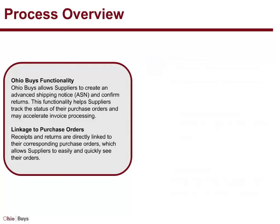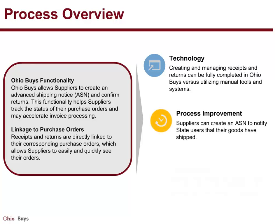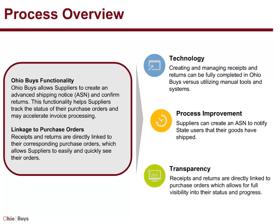OhioBuys provides the following benefits to the Managing Shipping Notices and Returns process. First, creating and managing receipts and returns can be fully completed in OhioBuys versus utilizing manual tools and systems. Second, suppliers can create an ASN to notify state users that their goods have shipped. And finally, receipts and returns are directly linked to purchase orders, which allows for full visibility into their status and progress.